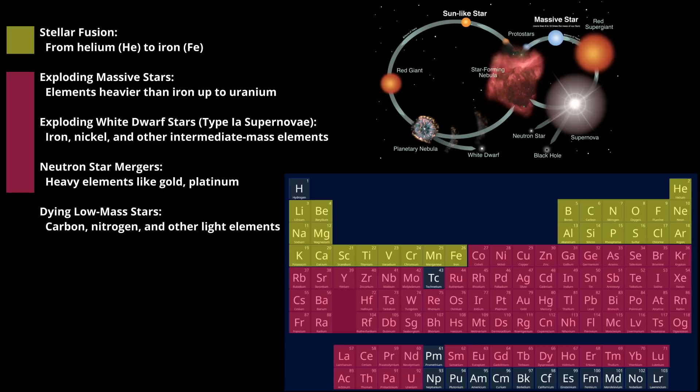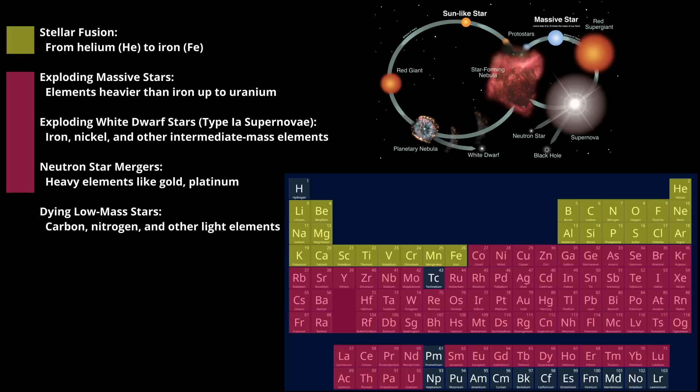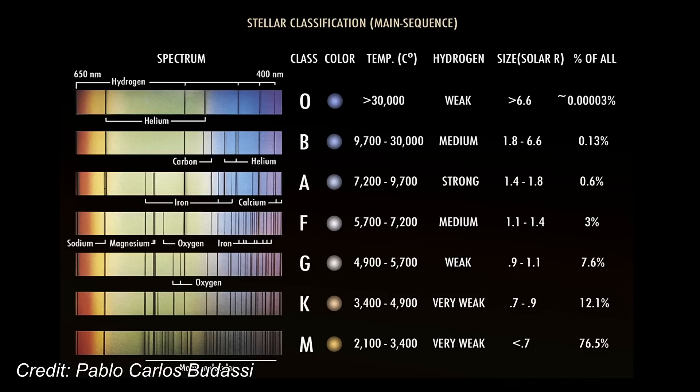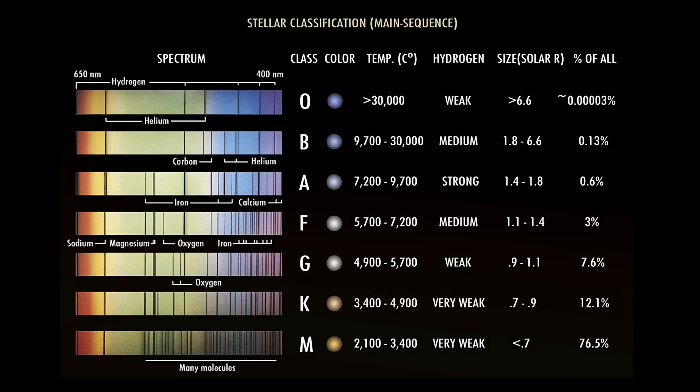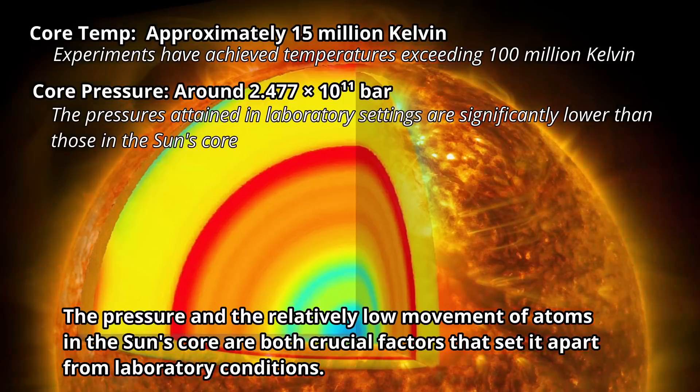While stellar nucleosynthesis remains the dominant framework for understanding how elements form in stars, it is essential to acknowledge that much of our knowledge comes from theoretical models and indirect evidence. Observations of stellar energy output, spectra, and element abundances provide strong support for these theories, but direct experimental evidence, particularly for fusion via quantum tunneling under stellar conditions, remains elusive.